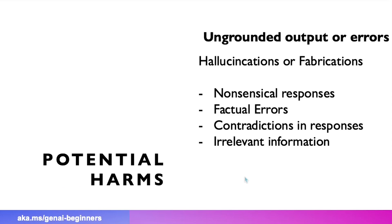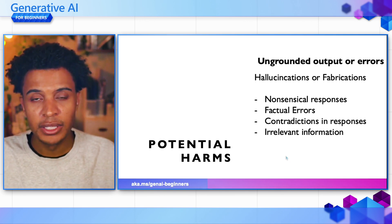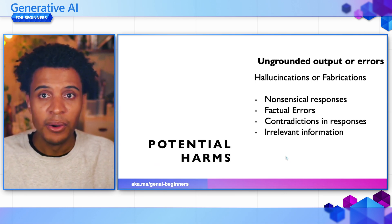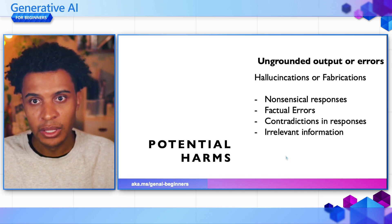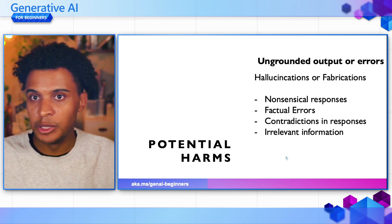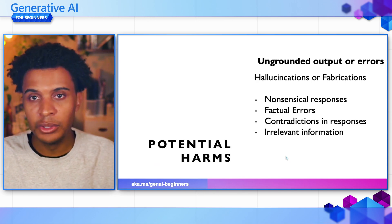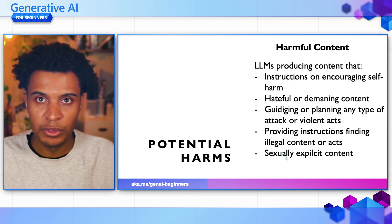So let's look at the potential harms we might encounter with generative AI applications. The first one is ungrounded outputs or errors — most commonly known as hallucinations or fabrications. They can sometimes be funny, like nonsensical responses, or they could be harmful, like factual errors that might be used in other systems, contradictions in responses, or presenting completely irrelevant information to the user.